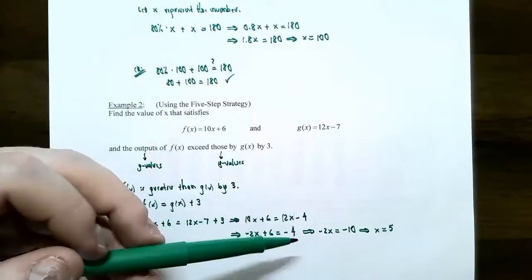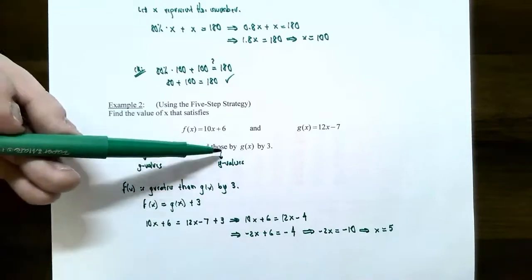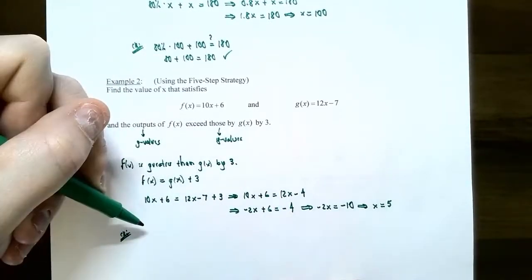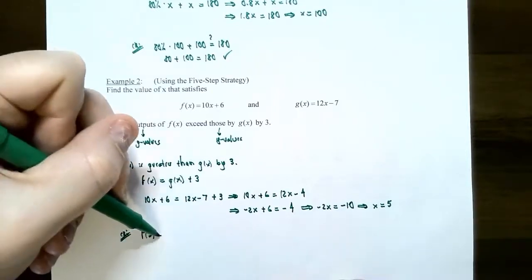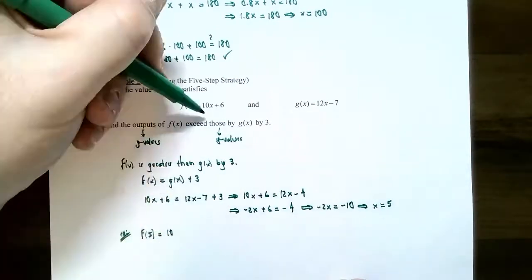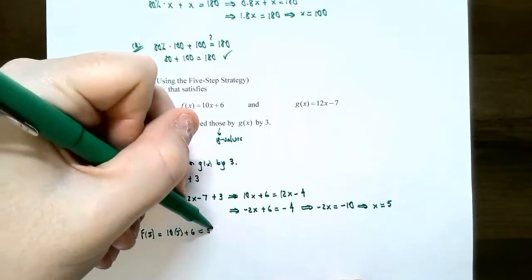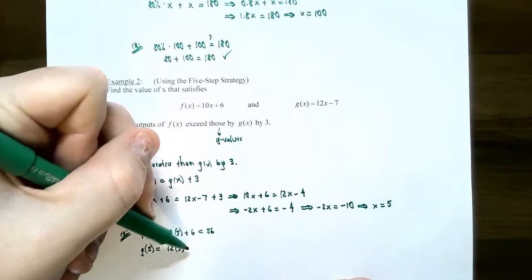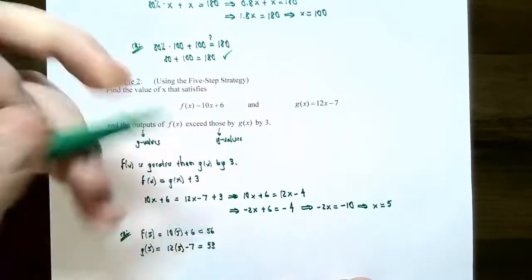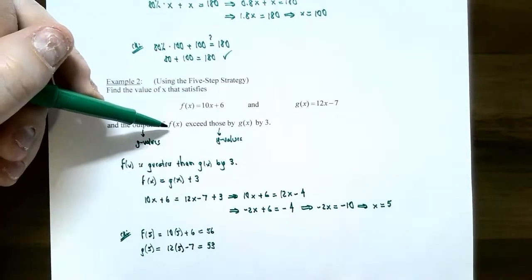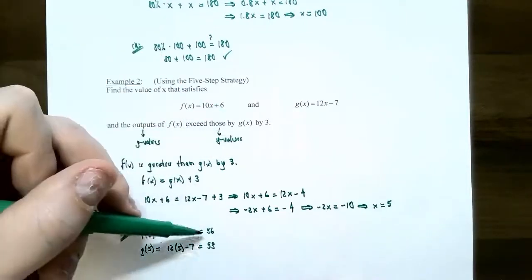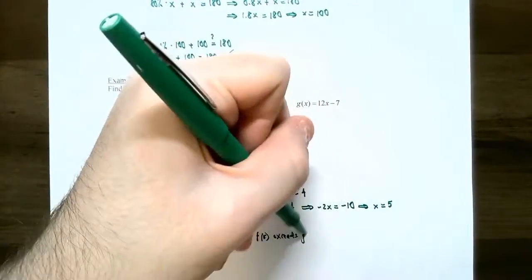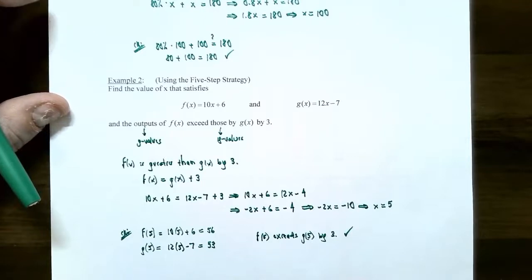X equals 5 for the outputs of f(x) to exceed the outputs of g(x) by 3. Let's check: f(5) equals 10 times 5 plus 6, which is 56. g(5) equals 12 times 5 minus 7, which is 53. Since 56 minus 53 equals 3, f(5) does exceed g(5) by 3. So x equals 5 is confirmed.